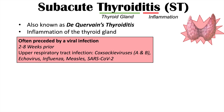This condition is often preceded by a viral infection. Oftentimes a patient will have a viral infection two to eight weeks prior to the onset of this condition, and it's oftentimes going to be an upper respiratory tract infection. Some of the viruses that can lead to this condition include Coxsackie viruses A and B, echoviruses, influenza viruses, measles, and SARS-CoV-2 has also been implicated as a potential cause.